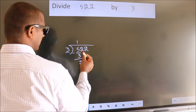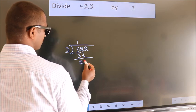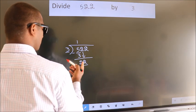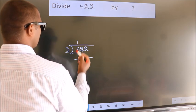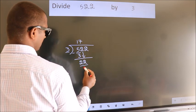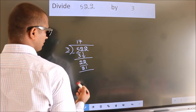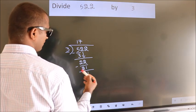After this, bring down the beside number. So 2 down. So 22. A number close to 22 in 3 table is 3 times 7 equals 21. Now we subtract. We get 1.